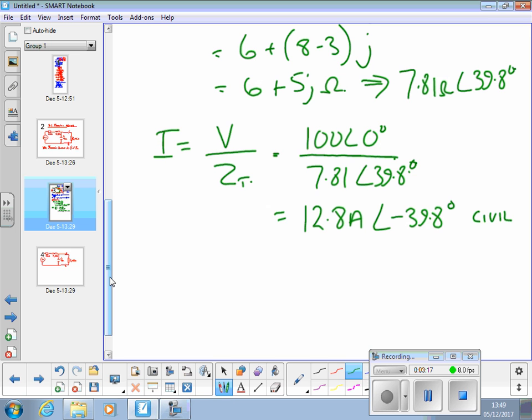We'd expect the current to be lagging, negative angle to the voltage, because of the circuit. Although it's got an inductor and a capacitor, the inductor's got the bigger ohmic value, and therefore, overall, that end circuit is inductive in nature.